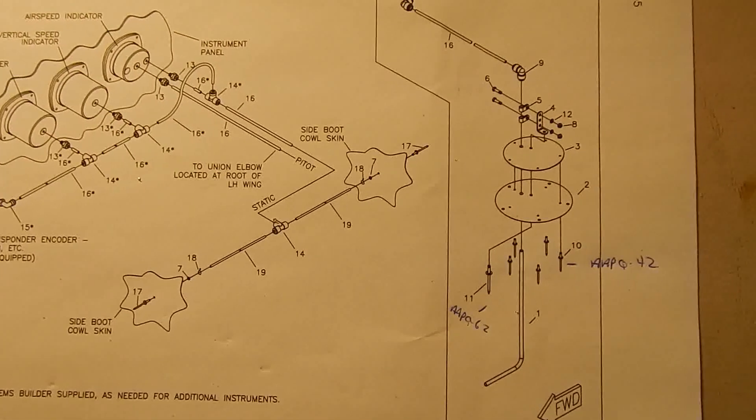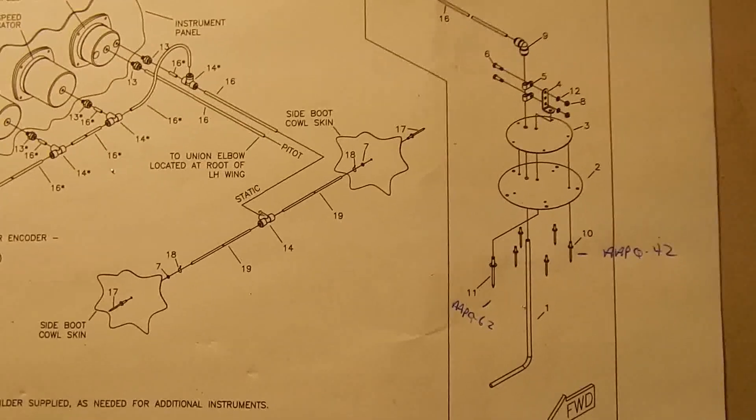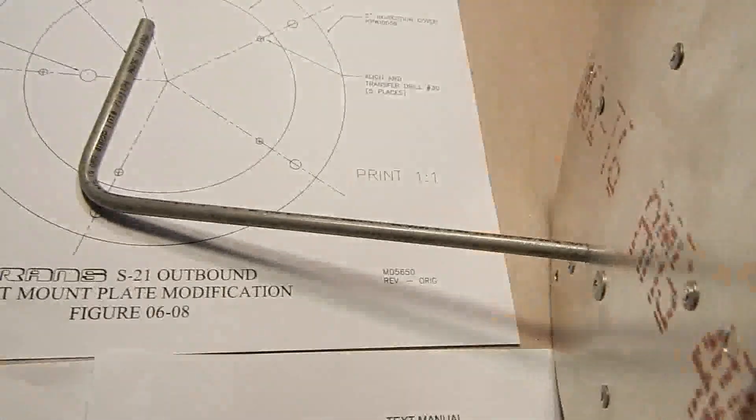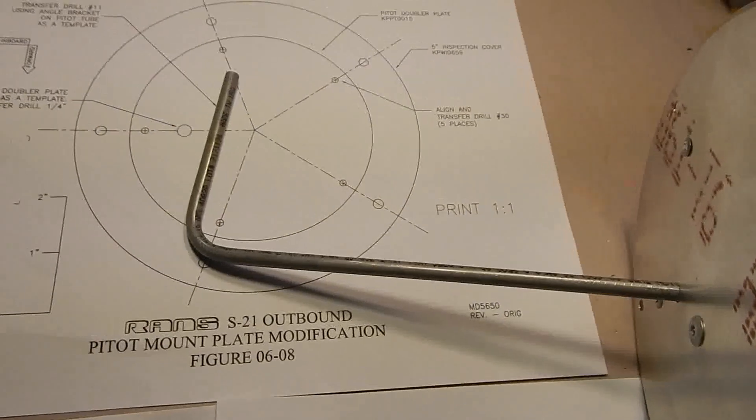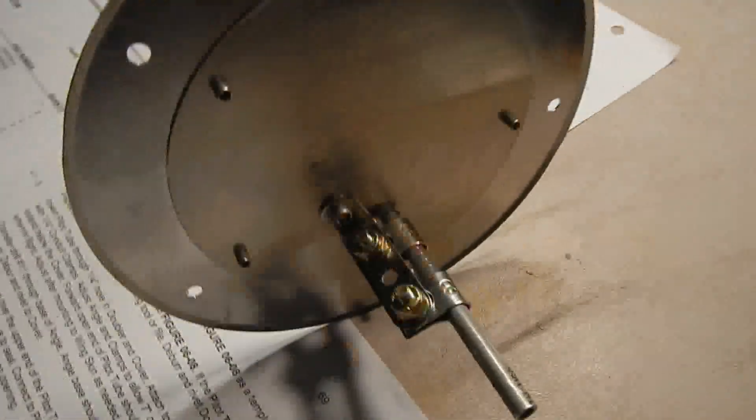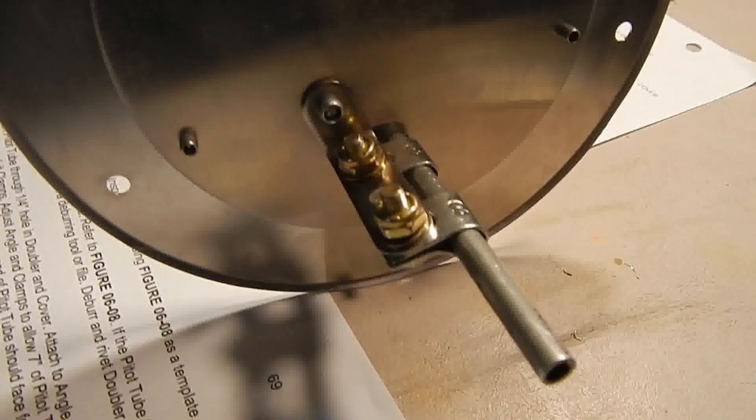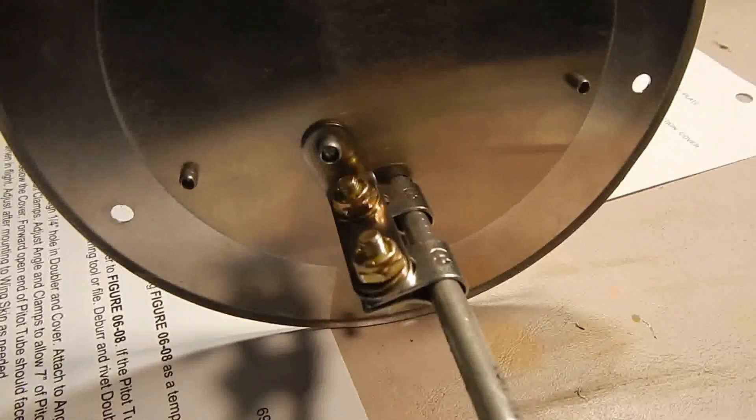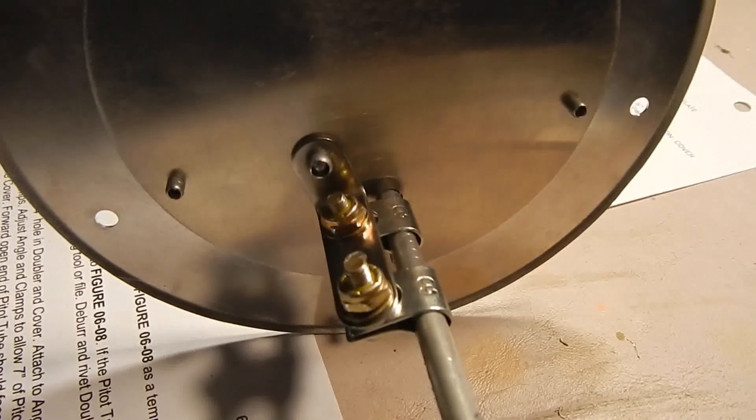Following the pitot tube installation and rivet guide, I have attached and riveted the doubler. I've put the pitot tube through. They say seven inches, but to be adjusted after installation to the wings. Riveted the doubler, attached the coupling, riveted the angle bracket, and attached the pitot tube with sheer nuts.